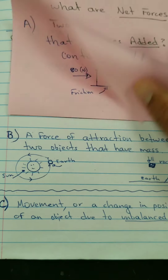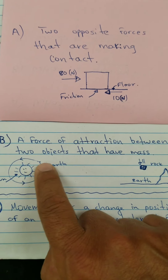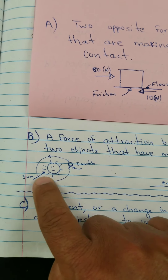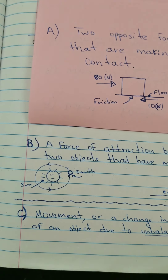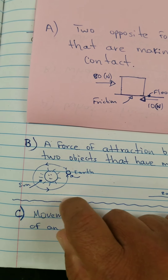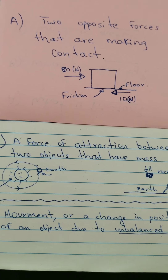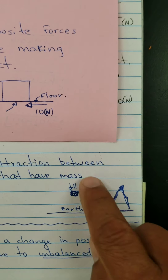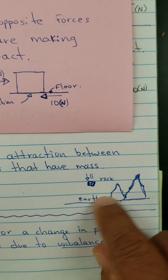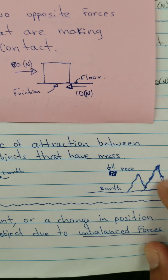Gravity is a force of attraction between two objects that have mass. One example is the Earth going around the Sun — it's trapped in the Sun's gravitational force field because of the mass of both objects. Another example is a rock falling from the atmosphere down to Earth's surface, being attracted by gravity.